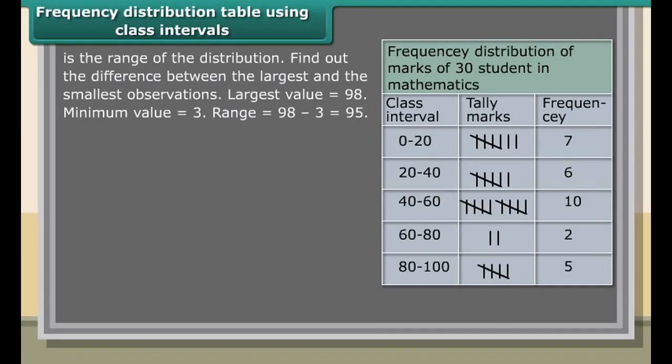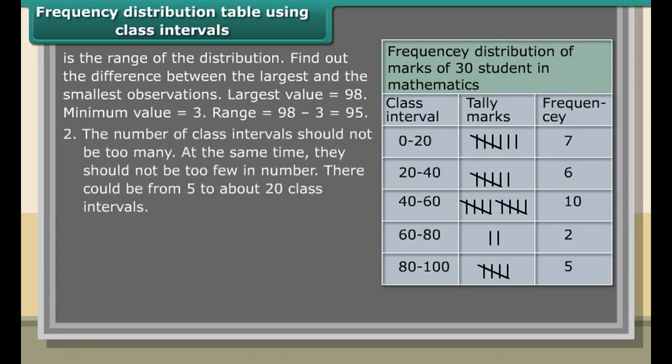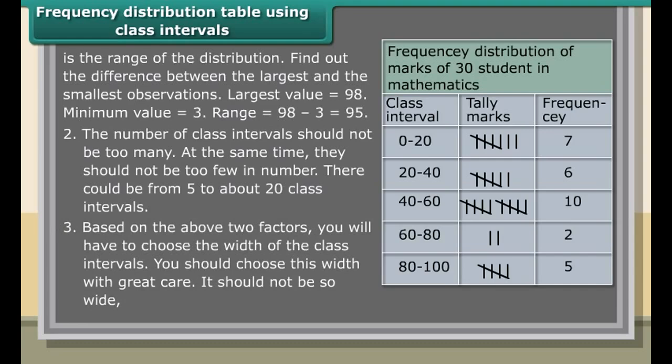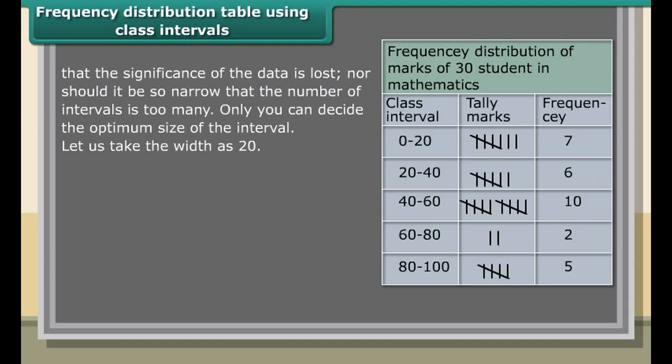Frequency distribution table using class intervals. Example: Given below are marks scored by 30 children in a class in mathematics. When you group data into class intervals, the most important factor is the range of the distribution. Find the difference between the largest and smallest observations. Largest value equals 98, minimum value is 3, so range is 98 minus 3 which equals 95.